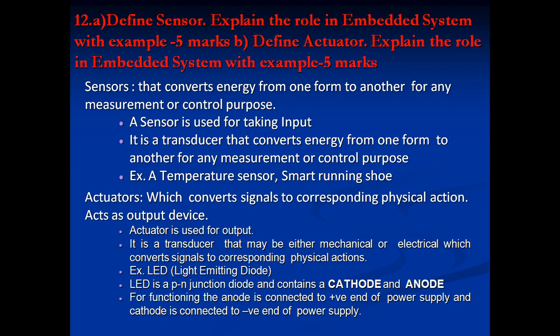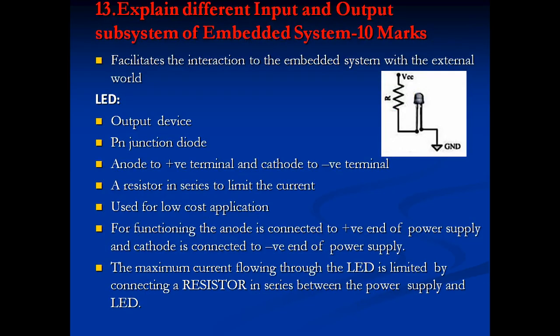An actuator converts signals to corresponding physical actions and acts as an output device. An actuator is a transducer — either mechanical or electrical — that converts signals to corresponding physical actions. For example, Light Emitting Diodes indicate the status of a particular application in the form of on or off.